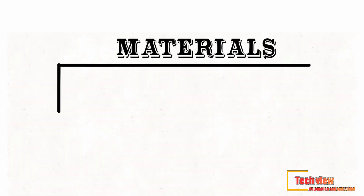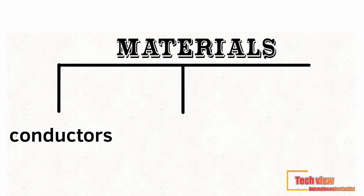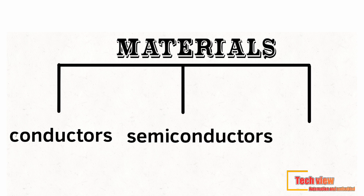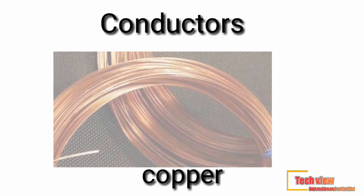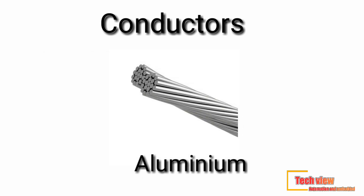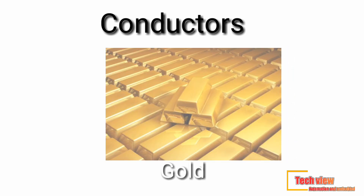Materials are commonly classified depending on their current carrying capacity. Materials are classified as conductors, semiconductors, and insulators. Conducting materials are good conductors of electricity; examples include copper, silver, and aluminium. Insulating materials are bad conductors of electricity; examples include porcelain, glass, quartz, rubber, and bakelite.